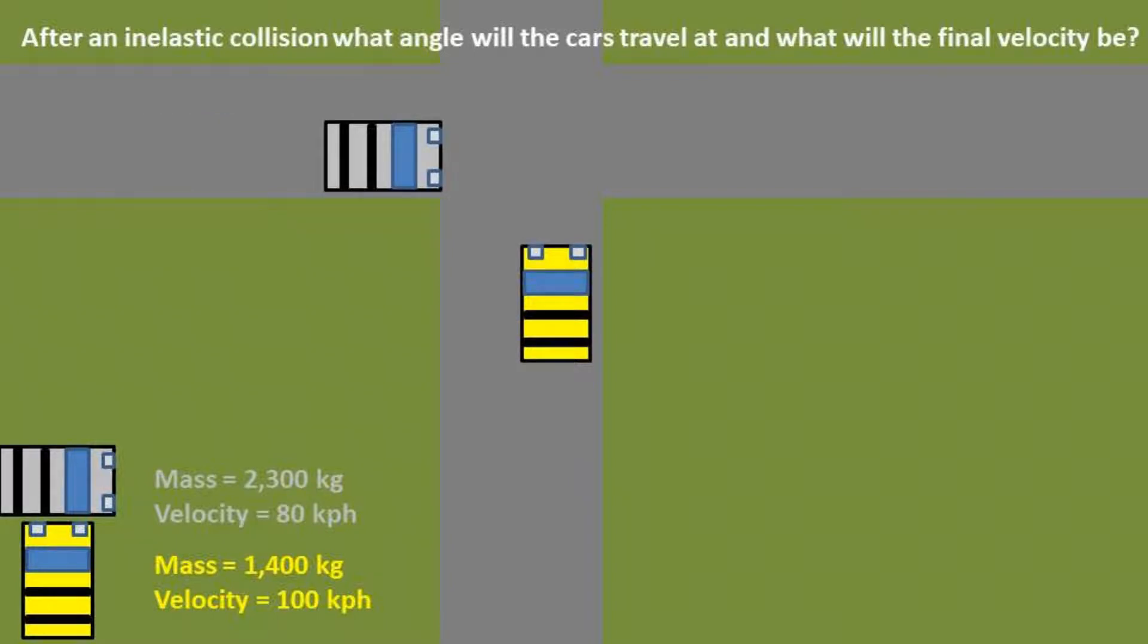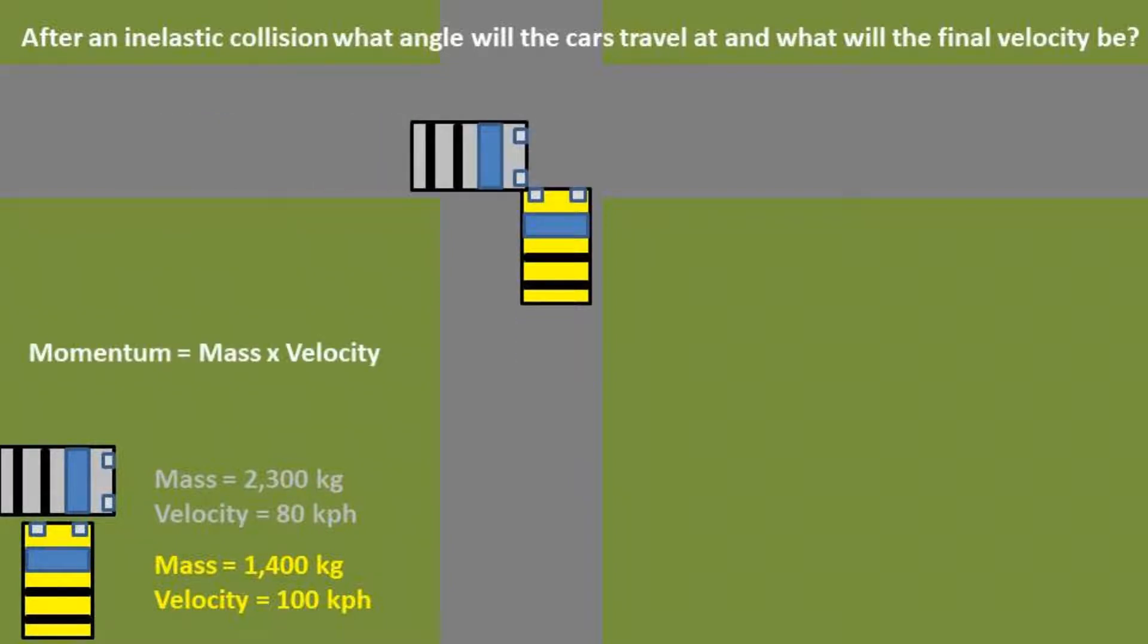After an inelastic collision, what angle will the cars travel at, and what will the final velocity be? Recall that an inelastic collision is where the two objects are fused together into one solid mass, and the momentum is conserved.